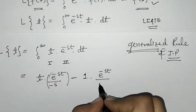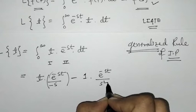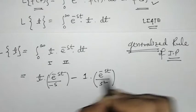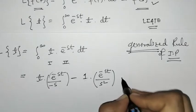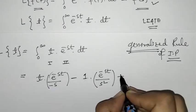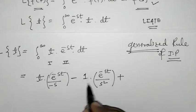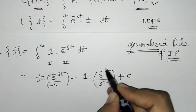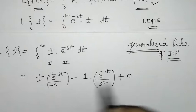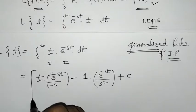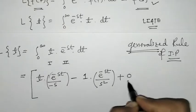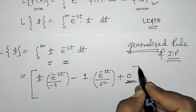The two negatives combine to give plus 1 over s squared. The next derivative of 1 is 0, so the multiplication gives 0 and that term vanishes. All of this is evaluated within limits 0 to infinity.